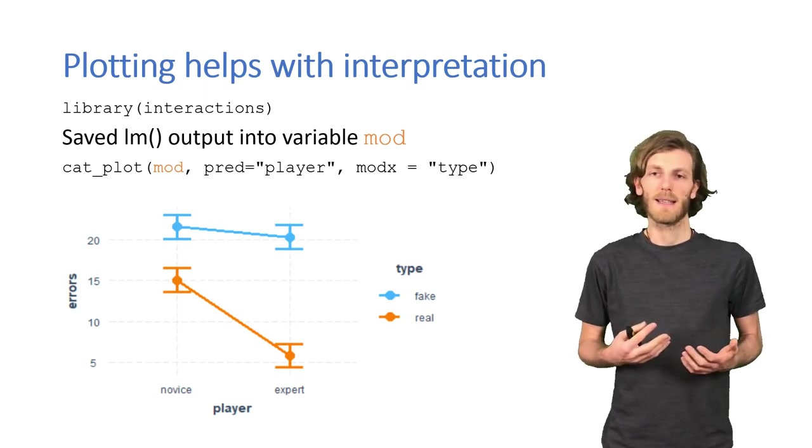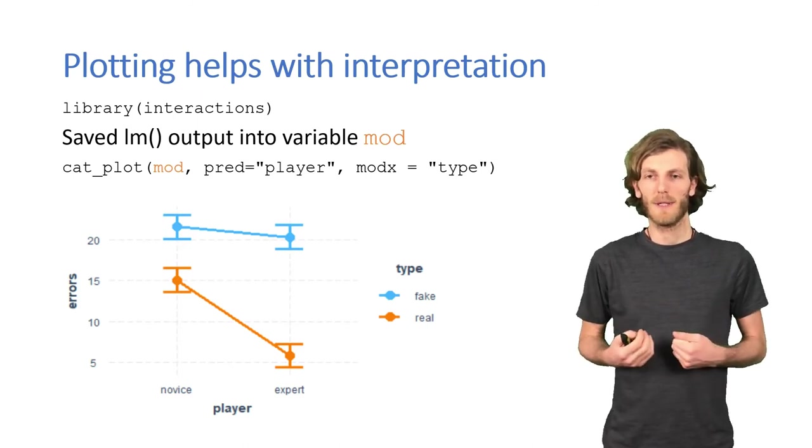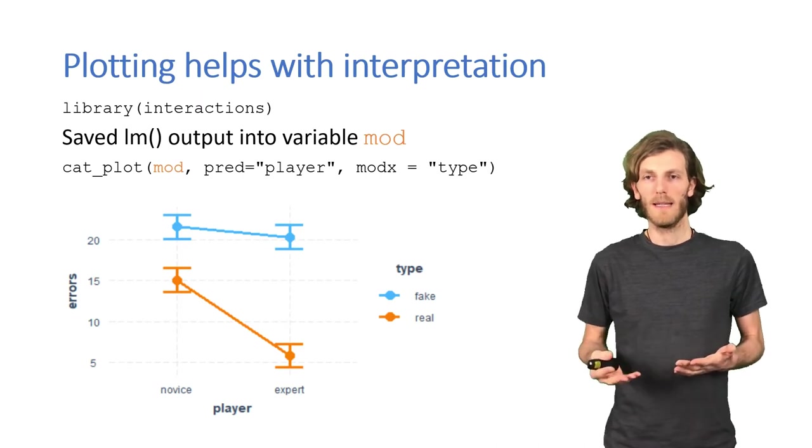So, such non-parallel lines are what we are looking for, if we are looking for an interaction. Quite clearly in this case, the difference between novices and experts only shows up for real positions, and doesn't really show up for fake positions.